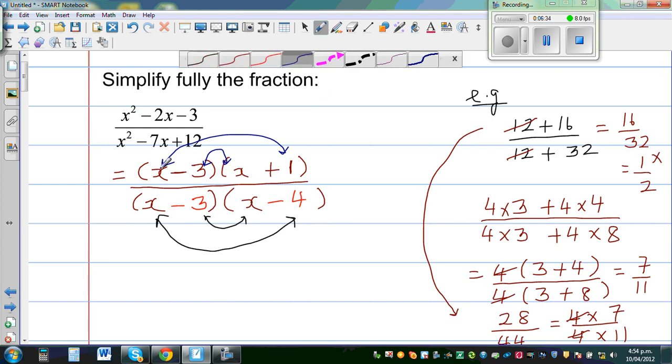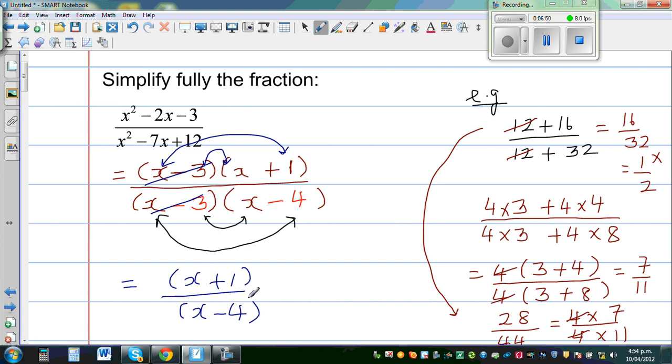Now you can cancel. This is x minus 3 and x minus 3. So your final answer is x plus 1 over x minus 4. You cannot simplify more than this. Don't cancel these x and write 1 quarter. This is your ultimate answer.